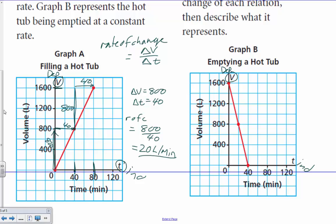Let's look at the other one. We're going the other direction. So, see what happens here. If we start at this point, we're going down minus 800 over 20. So, R of C for this one is going to be equal to down 800. So, negative 800 over positive 20. So, negative 40 liters per minute.